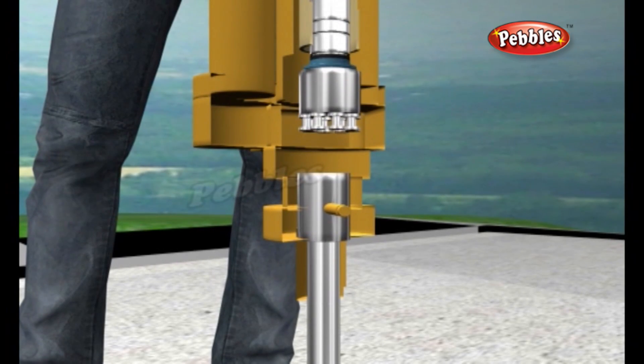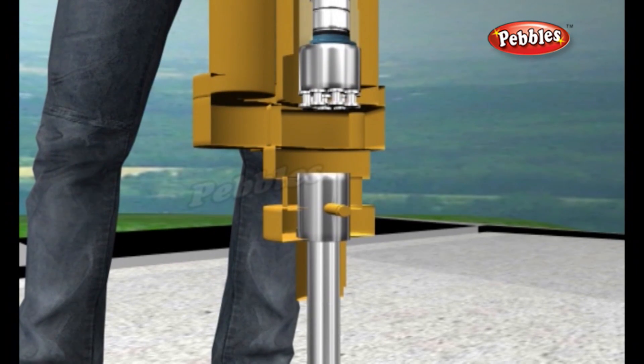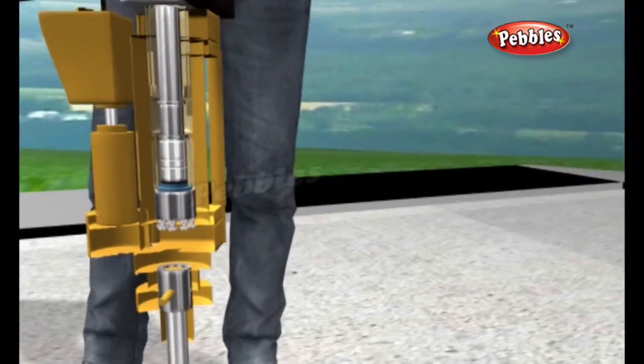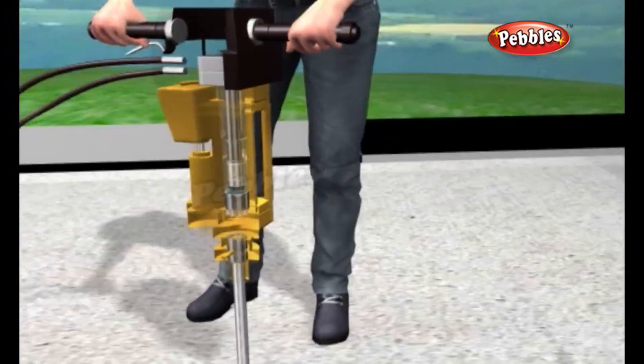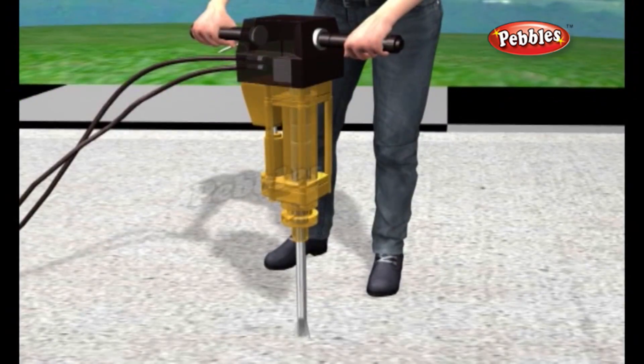A valve inside the tube network then flips over, causing the air to circulate in the opposite direction. Now, the pile driver moves back upward so the drill bit relaxes from the ground.